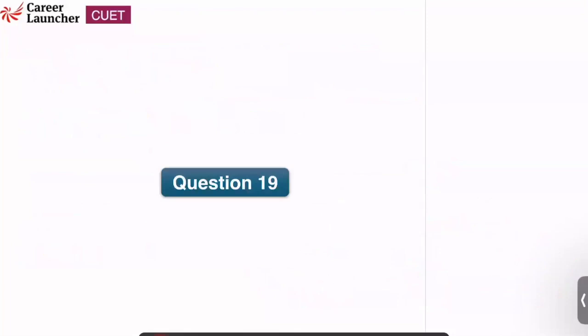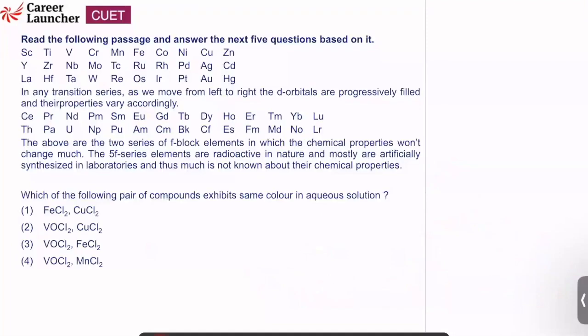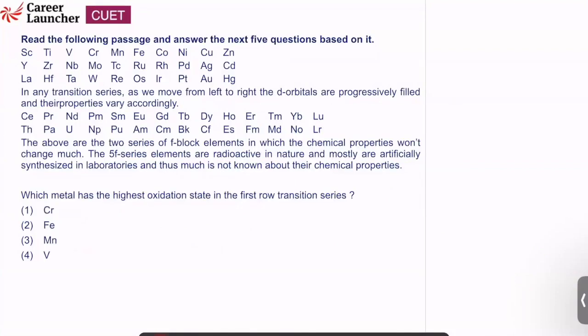Question number 19: which pair of compounds exhibits the same color in aqueous solution? CuCl2 is blue and FeCl2 (Fe²⁺) is green — not the same. VOCl2 and CuCl2 — both are blue in color. Answer is option 2. Question number 20: which metal has the highest oxidation state in the first row transition series? Answer is manganese, because it has 3d5 4s2 electrons which can all be donated, giving +7 oxidation state. Answer is option 3.